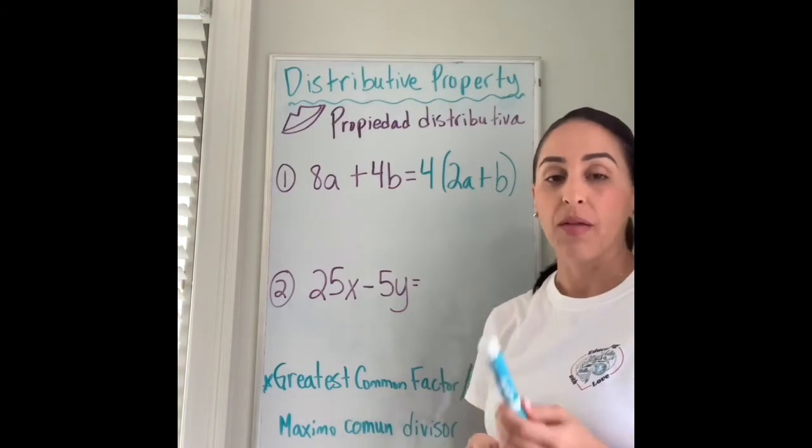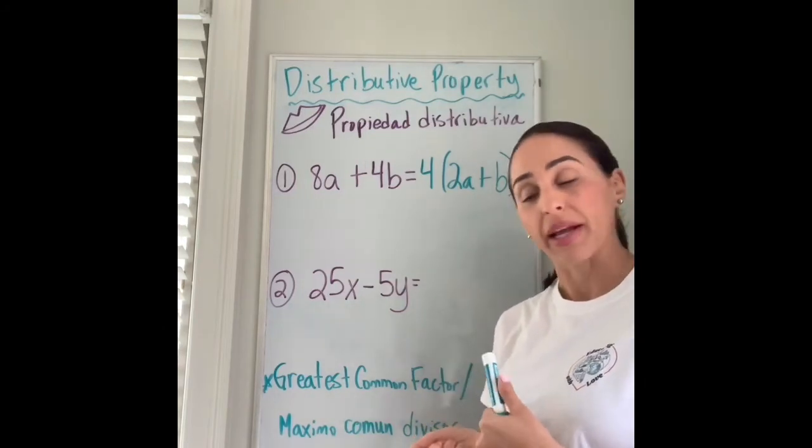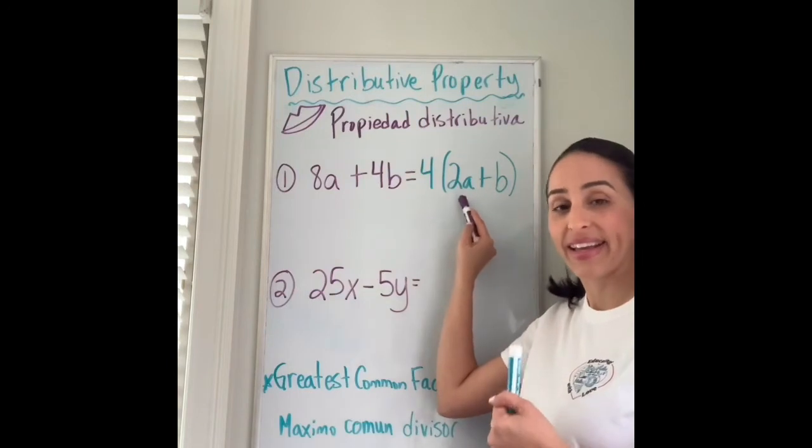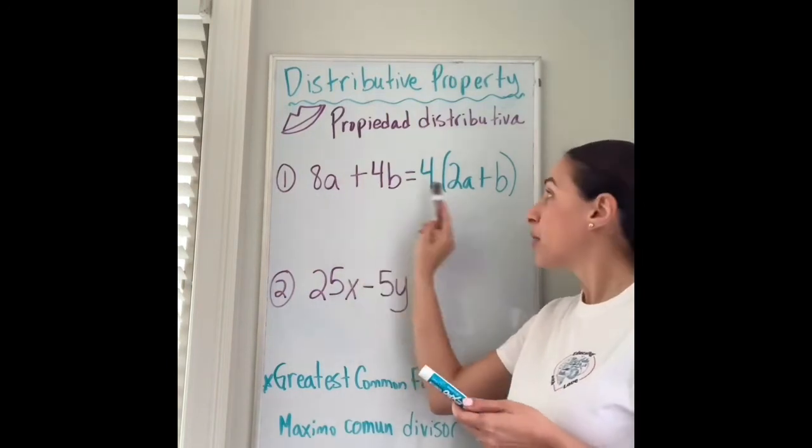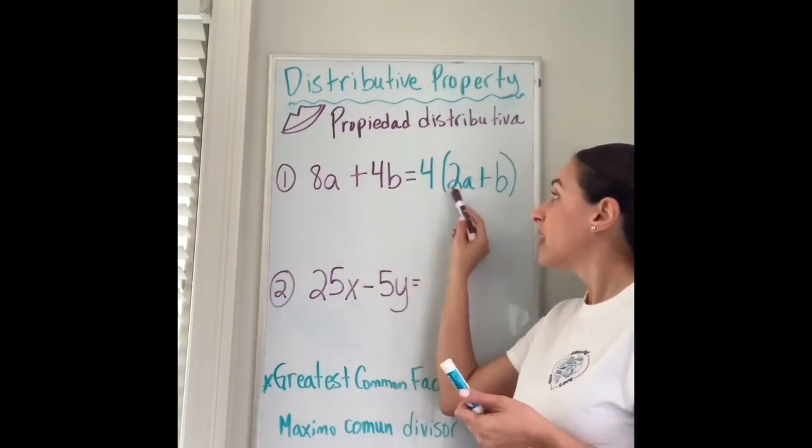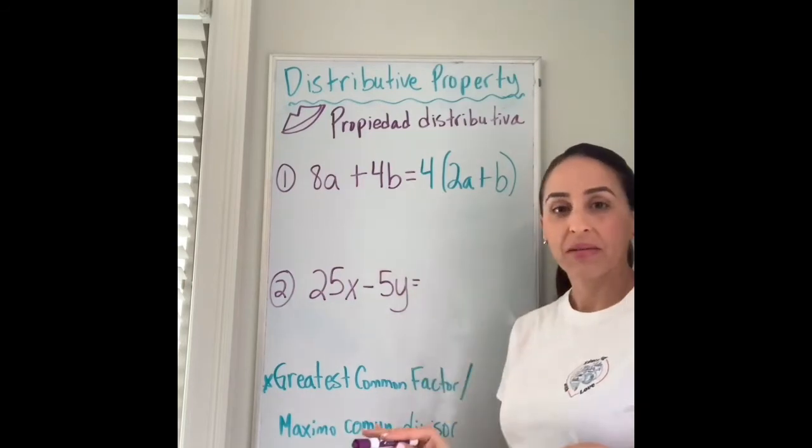How do I double check my work? Well, I go ahead and do the distributive property. 4 times 2a is 8a plus, keep the same sign, 4 times b is 4b. Done.